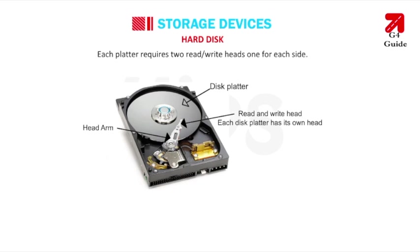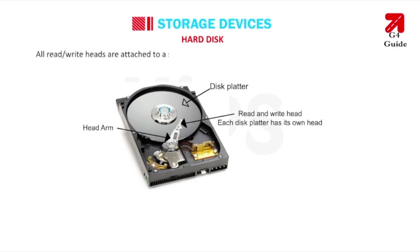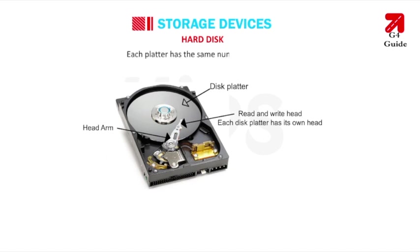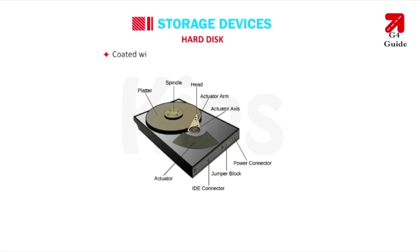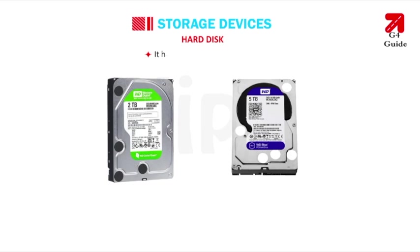A hard disk is made up of a collection of discs known as platters. Each platter requires read and write heads — one for each side. All read and write heads are attached to a single access arm so that they do not move independently. Each platter has the same number of tracks, and a location that cuts across all platters is called a cylinder.